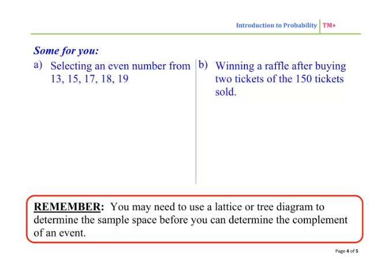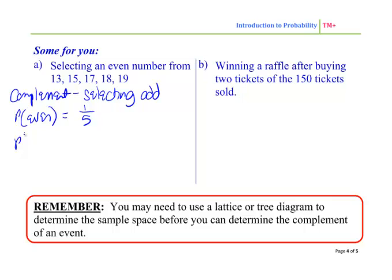So selecting an even number from 13, 15, 17, 18, 19. So the complement would be selecting odd or not selecting even. So the probability of even, which we did before, was 1 out of 5. So the probability of not selecting an even number would be 1 minus 1 over 5, which is 4 over 5.